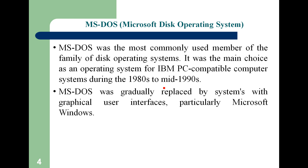Jab hum MS-DOS ko use kar rahe the, this operating system is a character-based, command line operating system. Commands yaad karni padti thi, aur agar aapko kisi particular operation ki command yaad nahi hai, toh aap woh operation perform nahi kar sakte. Toh users ko ye cheezein difficult lag rahi thi. So Microsoft came with Windows operating system — jisme icons thi, interaction easily thi, graphical user interface provide kiya gaya tha. Toh basically MS-DOS Microsoft Windows se replace ho gaya, because Windows was easy to use — graphical user interface, device independent graphics, and multitasking support.